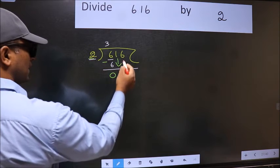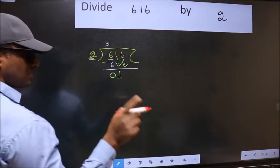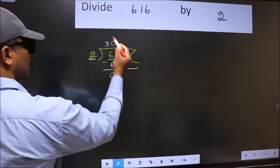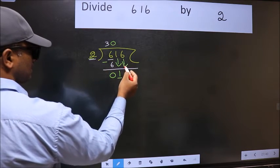So we should bring down the second number. And the rule to bring down second number is we should put 0 here. Then only we can bring this number down.